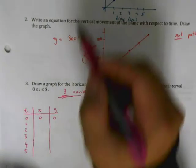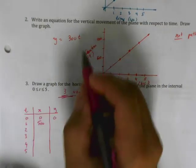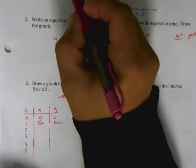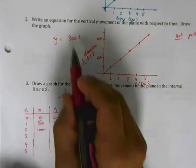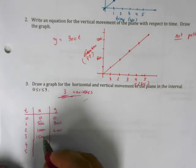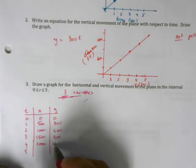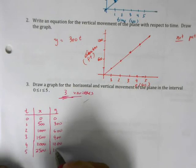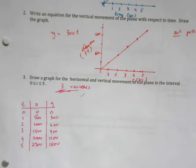At t = 0 the plane hasn't moved at all. At t = 1: x = 500, y = 300. At t = 2: x = 1,000, y = 600. Continuing: t = 3 gives x = 1,500, y = 900; t = 4 gives x = 2,000, y = 1,200; and t = 5 gives x = 2,500, y = 1,500. Now we can draw our graph.